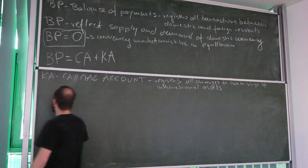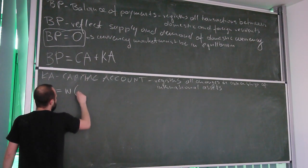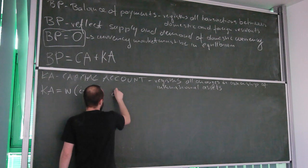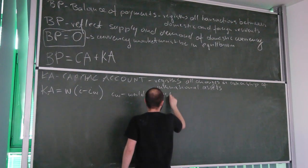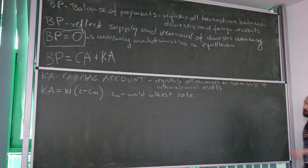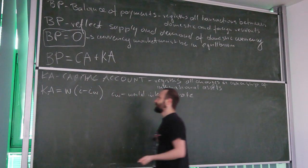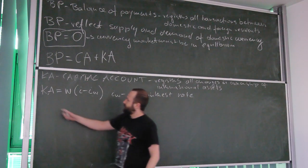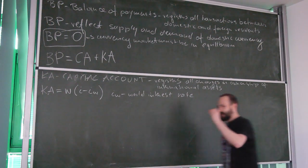The formula describing the capital account is given by W times (I minus IW), where IW is simply the world interest rate — the interest rate outside our country. We need to establish the sign of the partial derivative of the capital account with respect to interest rate, which will be equal to W.